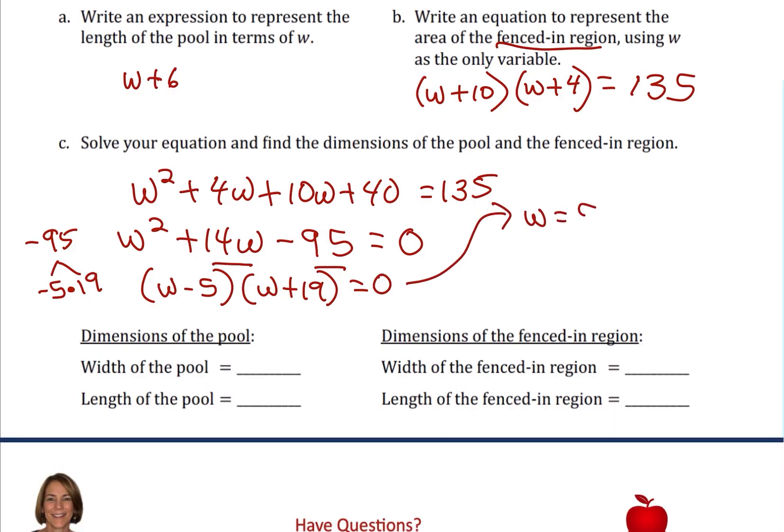We're going to get W equals 5. The other possibility is that W equals negative 19. It does not make sense to have a negative width. We can't have a negative 19 as the width of our pool. So we know that W equals 5 is the width of the pool. So the width of the pool is 5 yards. The length of the pool was 6 more than that. We're going to use that expression. So the length of the pool is going to be 11 yards.